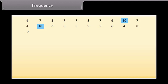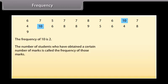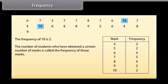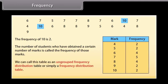Frequency. See that two students have scored 10 marks, so the frequency of 10 is 2. The number of students who have obtained a certain number of marks is called the frequency of those marks. We can write this data in a table form to make it more understandable. These are the marks and these are the frequencies. We can call this table an ungrouped frequency distribution table or simply a distribution table.